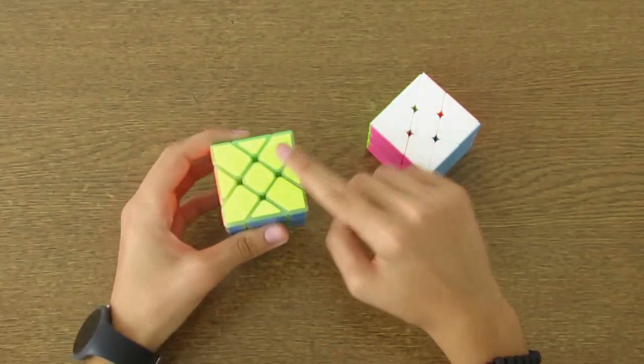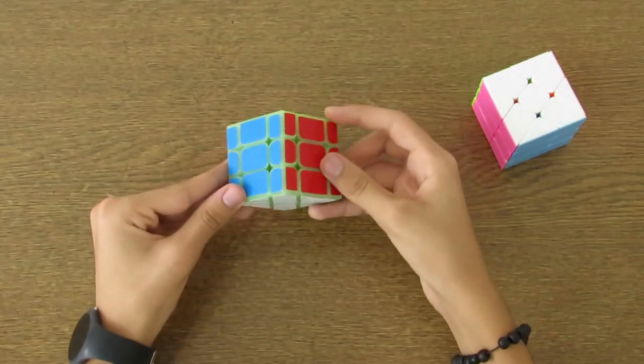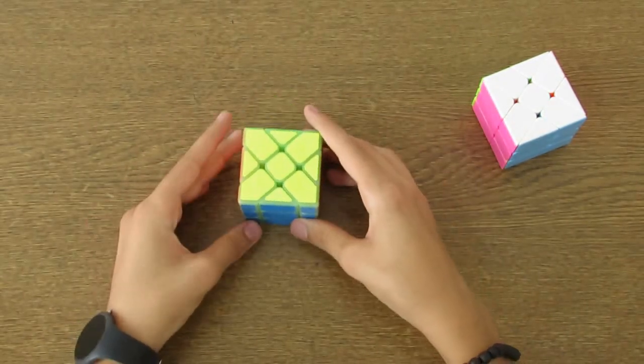This kind of puzzle is called shape mod. The mechanism of an ordinary cube was turned diagonally by a few degrees. Like this, now our centers look the same.